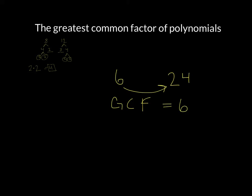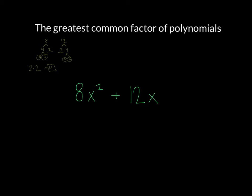Now what does that mean when we're factoring polynomials or finding the greatest common factor between polynomials? When you're trying to find the greatest common factor between terms in a polynomial, we break up the terms — remember, terms are separated by addition or subtraction. So we're really looking at the greatest common factor between 8x squared and 12x. First, you look at the greatest common factor between the constants. We know the greatest common factor between 8 and 12 is 4 because we already found it.